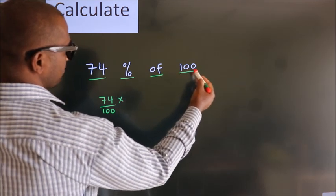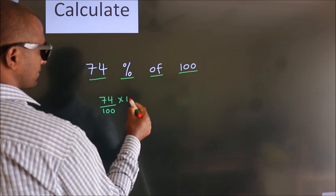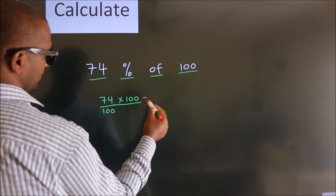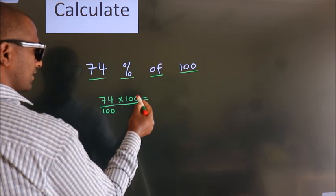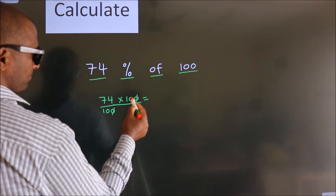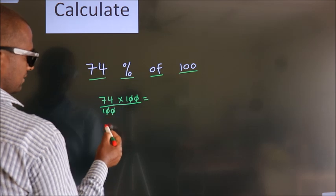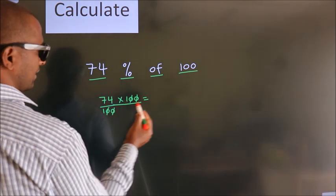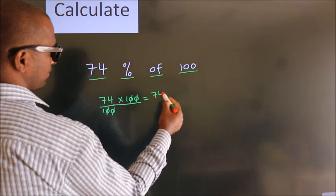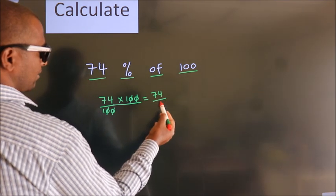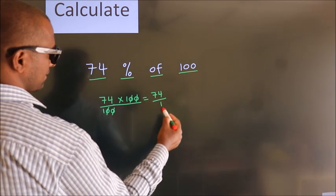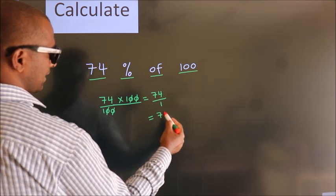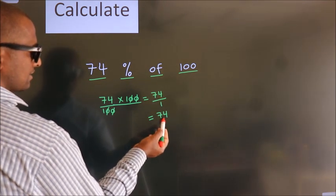This number as it is. Now I cancel this 0 with this, and this 0 with this. We are left with 74 into 1. In the denominator, 1. So 74 by 1 is 74. This is our answer.